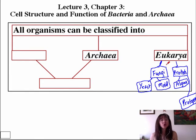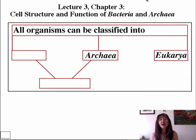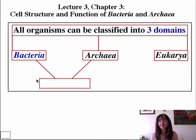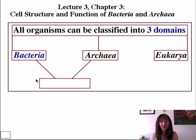Now, there are two other domains of life: the Archaea and the Bacteria. The Archaea are their own domain—they have characteristics of both Bacteria and Eukarya. Bacteria are the dominant form of life on Earth. Not humans—bacteria are the dominant life form on Earth.